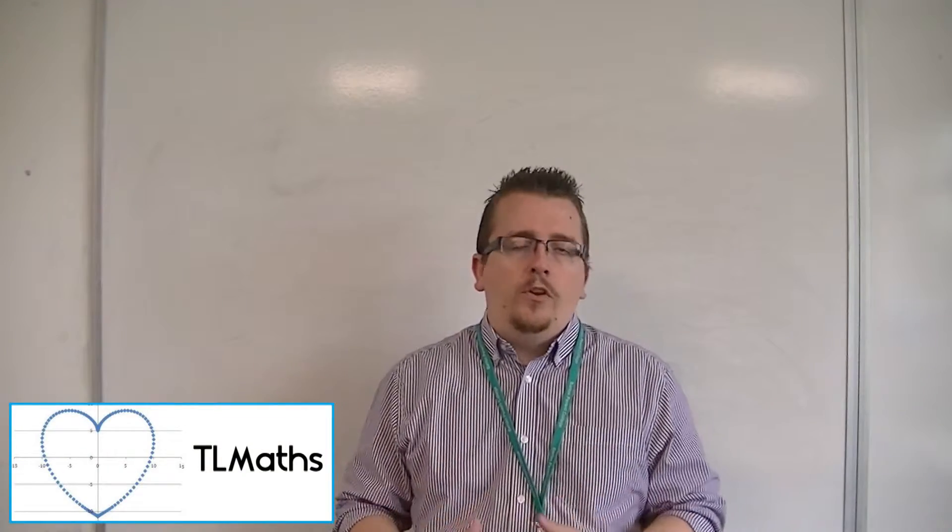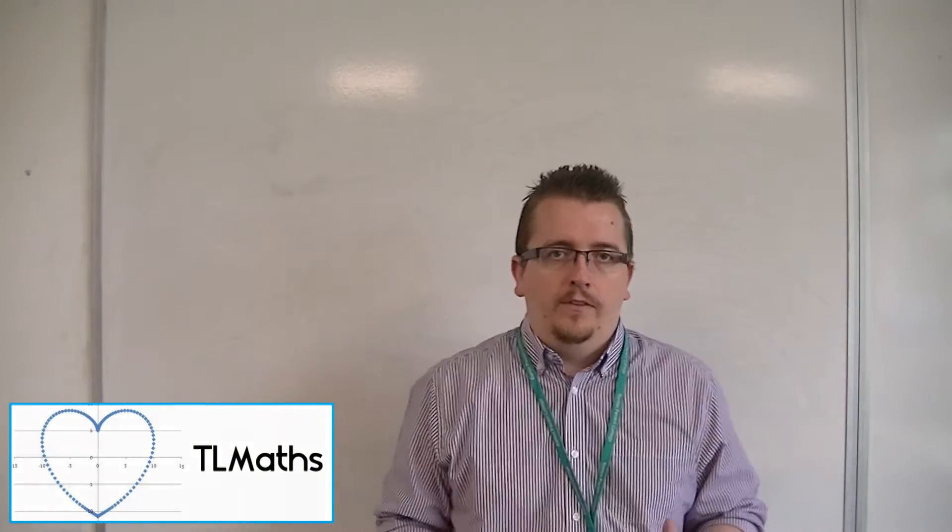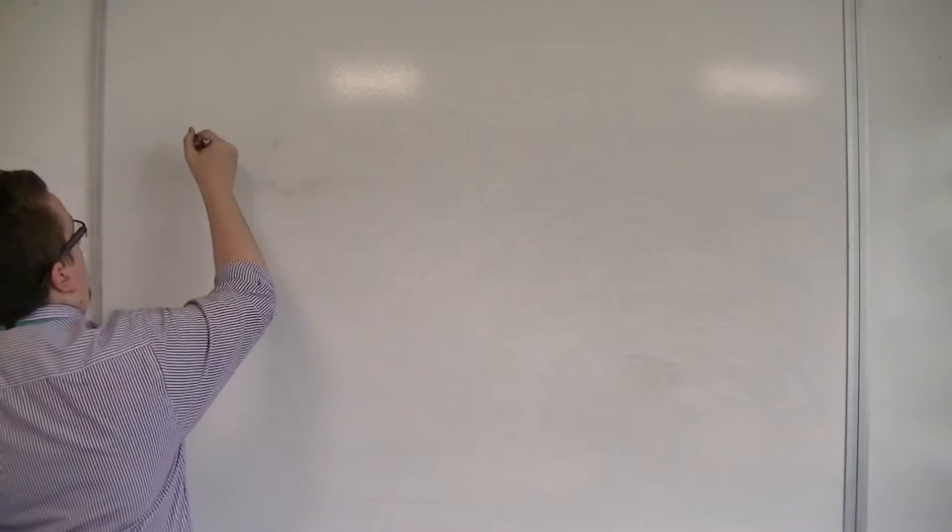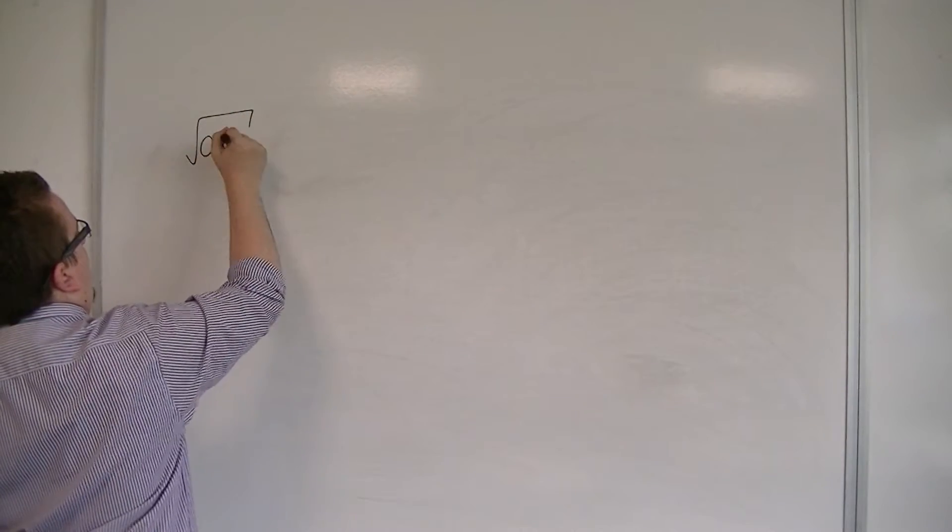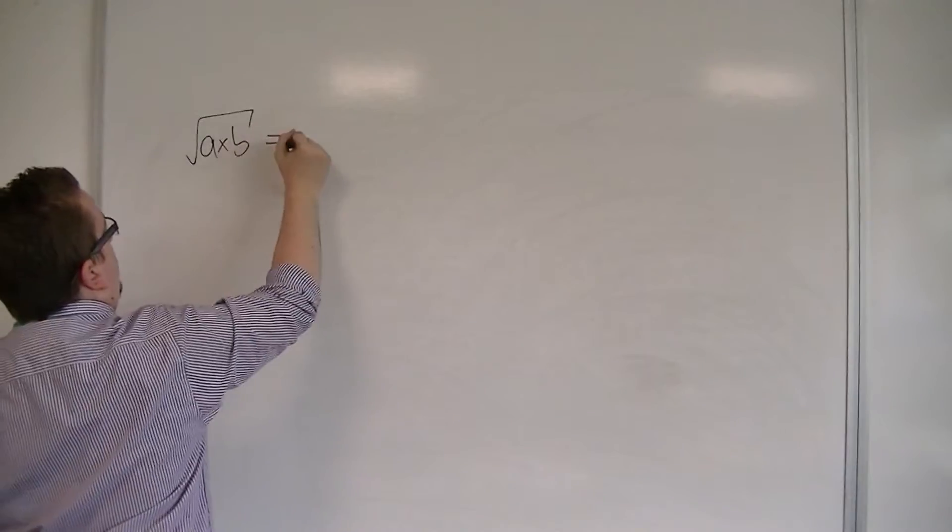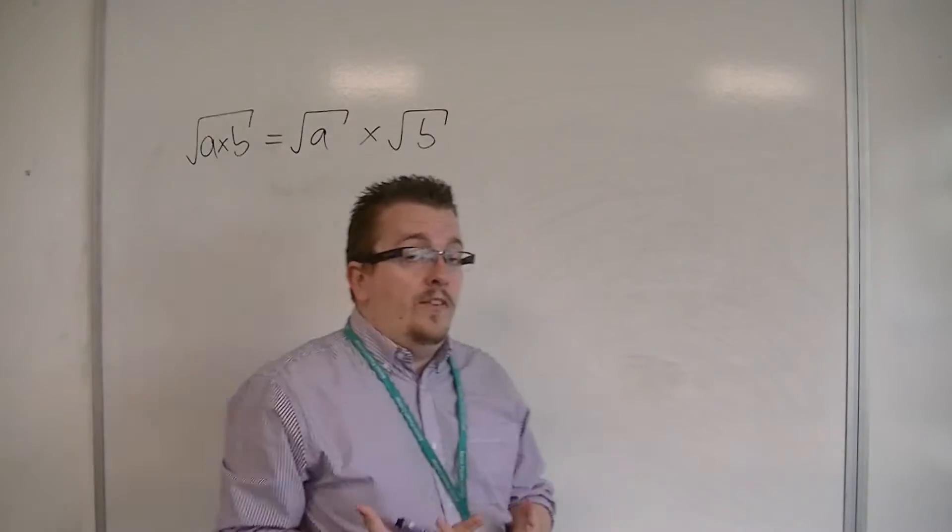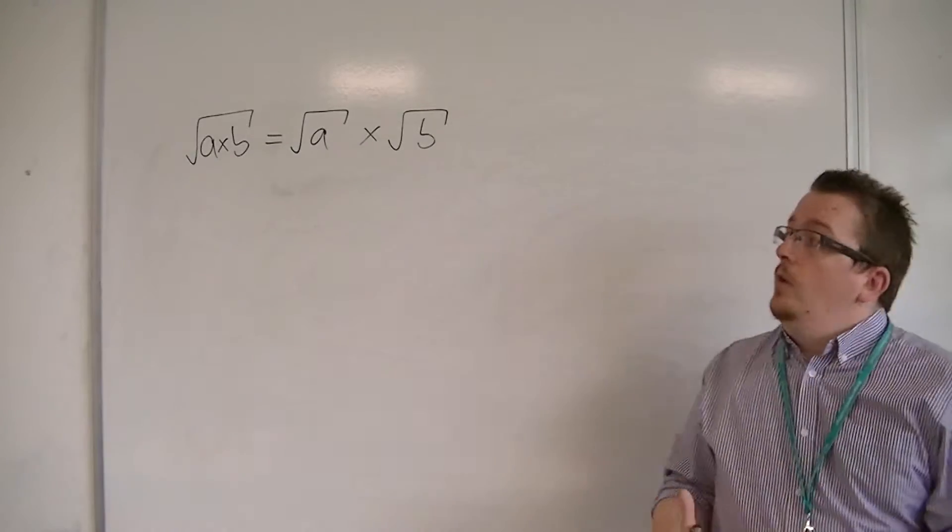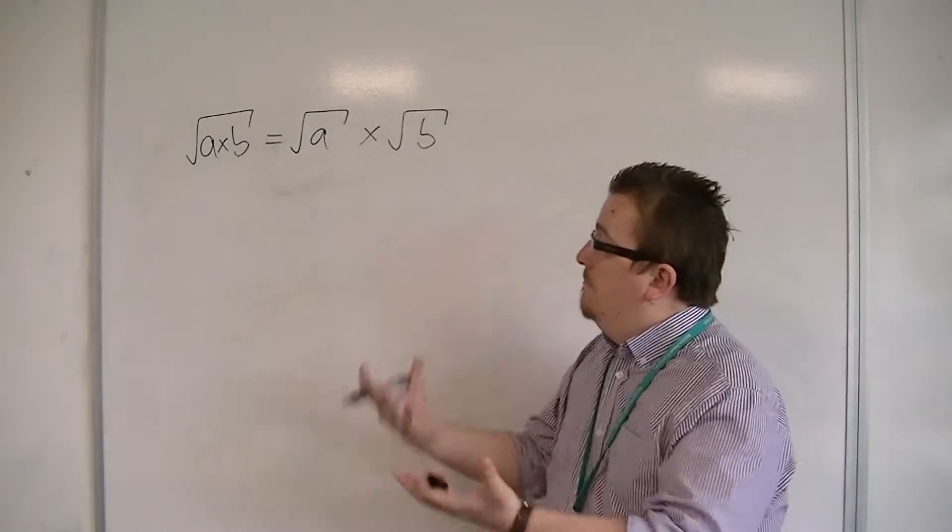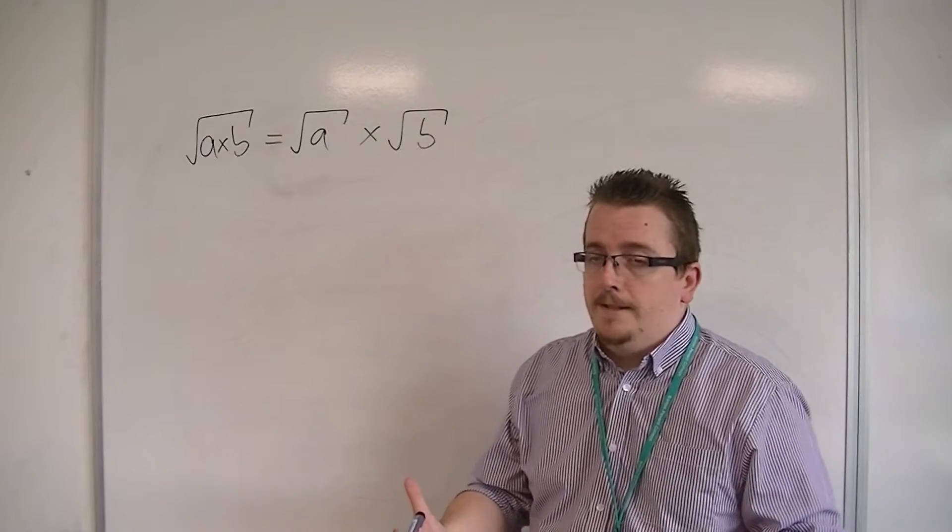So I've introduced a way of simplifying surds, whereby we could say, well, the square root of a times b is equal to the square root of a times the square root of b. And this is something I just introduced without really fully explaining it.